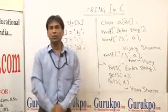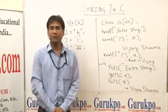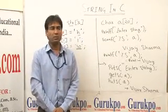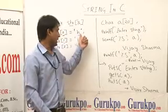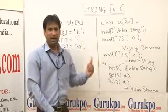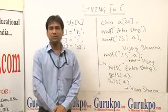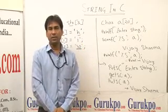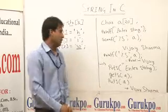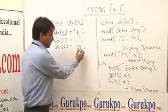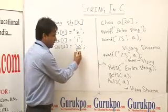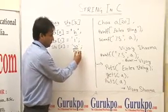In this, we store two characters — 'h' and 'y' — and plus one for the terminating character, that is the null character.